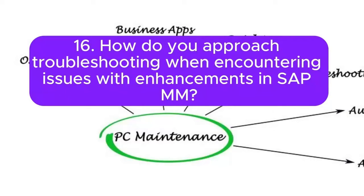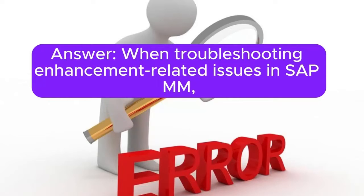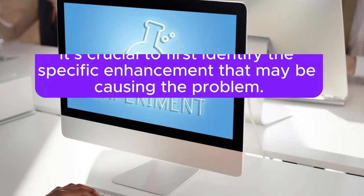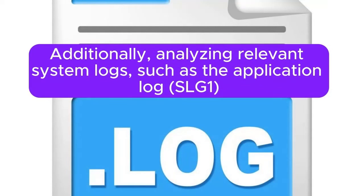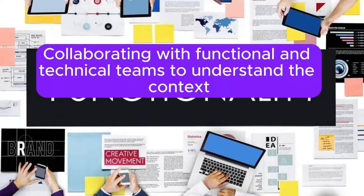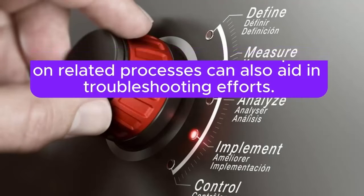How do you approach troubleshooting when encountering issues with enhancements in SAP MM? When troubleshooting enhancement-related issues, it's crucial to first identify the specific enhancement causing the problem by reviewing the implementation of user exits, BAdIs, or enhancement spots to ensure they are correctly coded and activated. Analyzing relevant system logs, such as the application log SLG1 or developer traces, can provide valuable insights. Collaborating with functional and technical teams to understand the context and impact on related processes also aids troubleshooting.